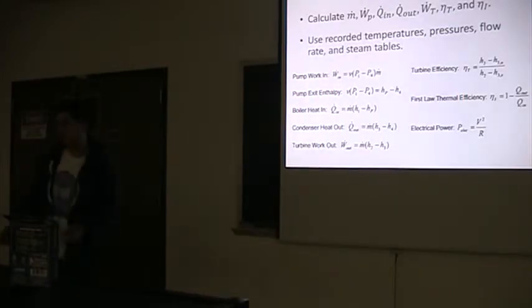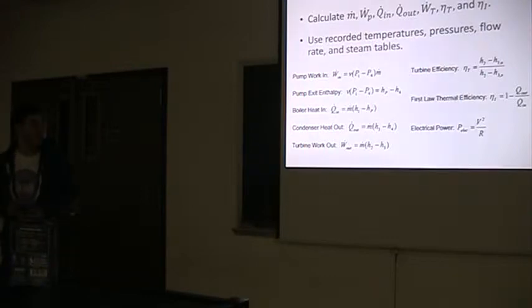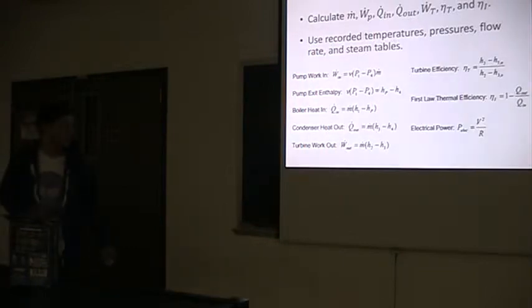For the experiment, we want to be able to calculate the mass flow rate of the system, the work input at the pump, the heat in the boiler, the heat out of the condenser, the work produced at the turbine, the turbine's isentropic efficiency, and the cycle's first law thermal efficiency. We're going to do this using recorded temperatures, pressures, flow rate, and steam tables.